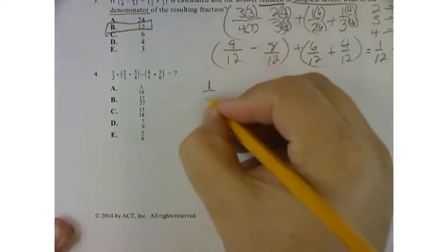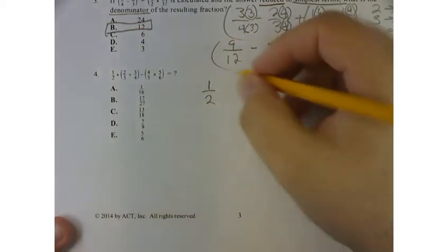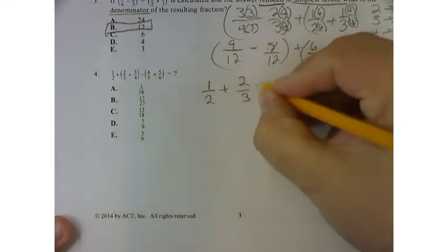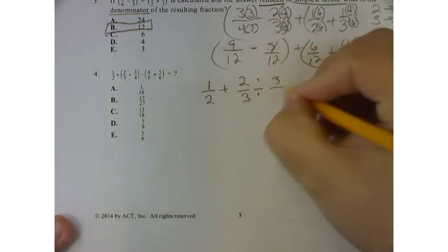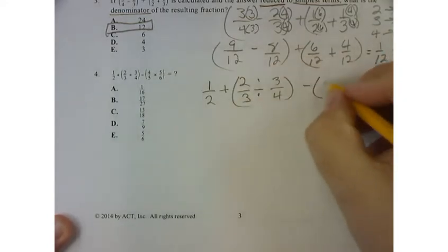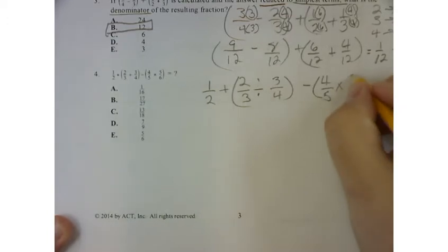It's a continuation of problem 3, except now they gave us a whole bunch of numbers. I'm writing them a little bigger because they're kind of small and hard to see. So we're going to follow order of operations. Please excuse my dear Aunt Sally. That means I'm going to have to do the stuff in the parentheses first.